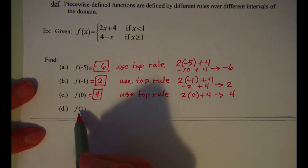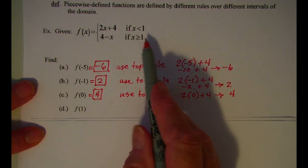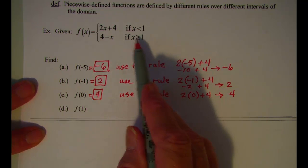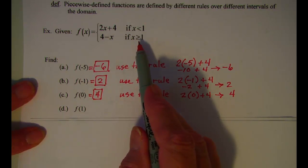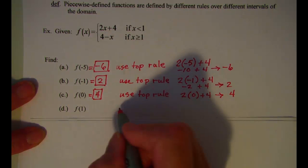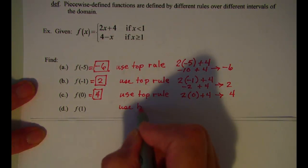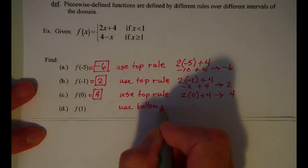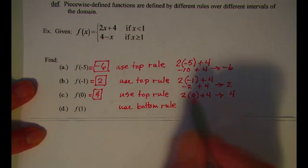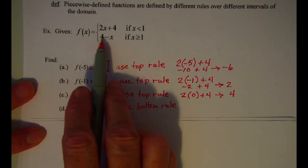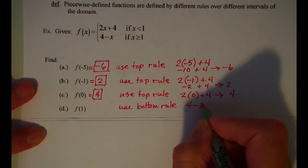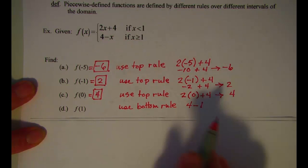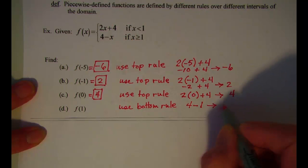And for this one I'm told that x is equal to 1. This means I'm going to have to use the bottom rule because I use this rule when x is greater than or equal to 1. So use the bottom rule and that rule is 4 subtract x. So 4 subtract 1, because my x is 1, and this value is 3.